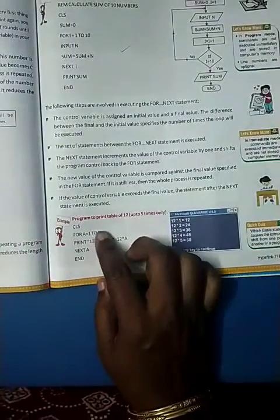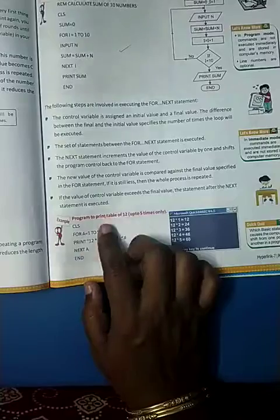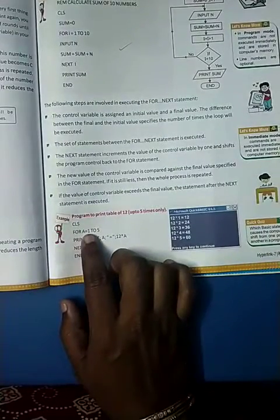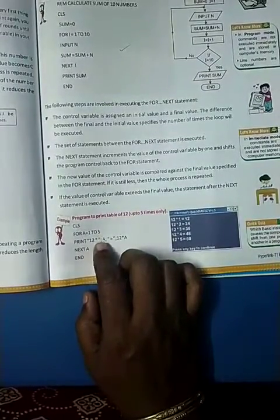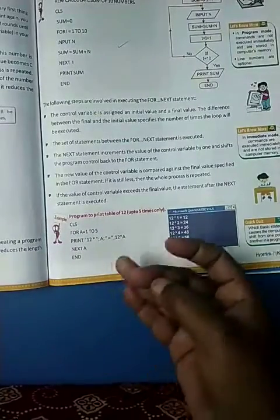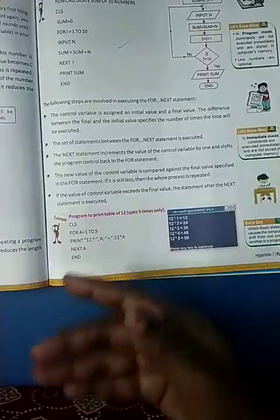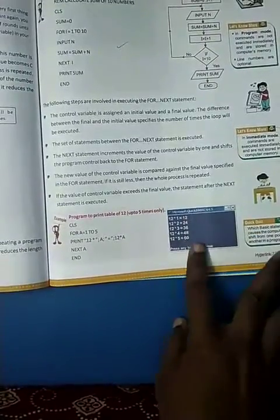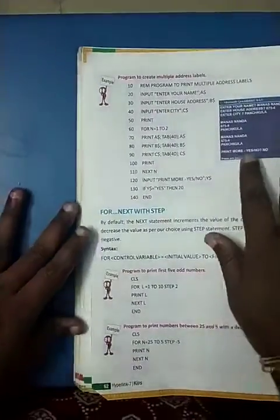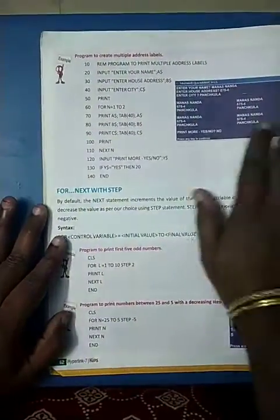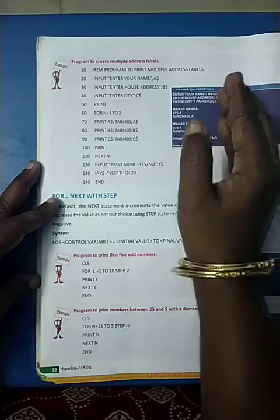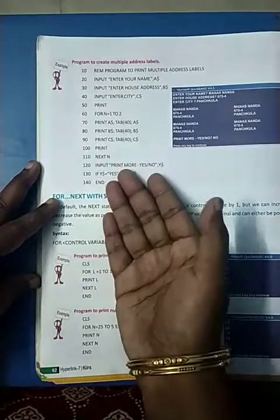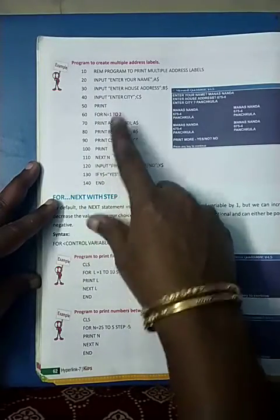We can print tables using FOR-NEXT statements — you should know this program thoroughly. Say FOR A equal to 1 TO 5, PRINT 12 star A — that is 12 into A. A will start from 1, then go to 2, 3, 4, 5. NEXT A will keep on incrementing and then END. So your output will be the first 5 multiples of 12. This is another example for multiple addresses — like if we have 10 people in our class and I have to get the name and address from each person, I can put that in the program.